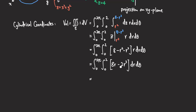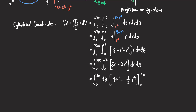Since there is no θ involved in the inner integrand, we can integrate over θ at the same time. Integrating (8r minus 2r cubed) with respect to r gives 4r squared minus one-half r to the fourth, evaluated from 0 to 2.